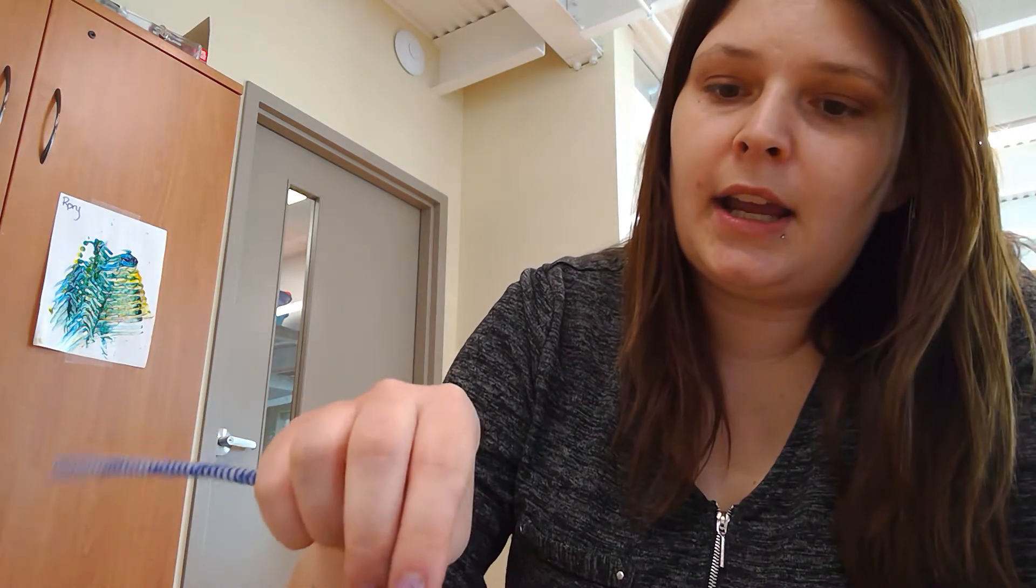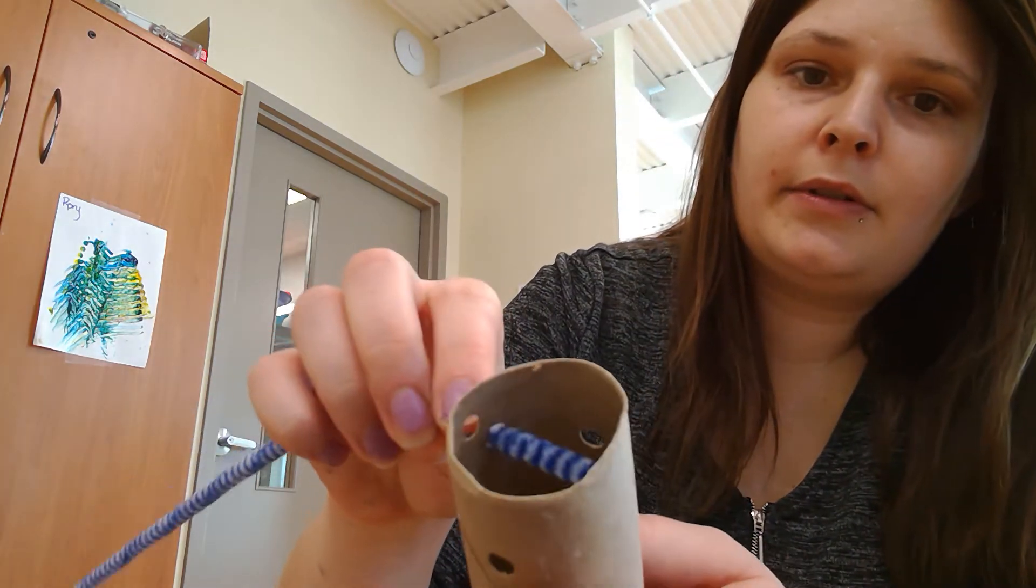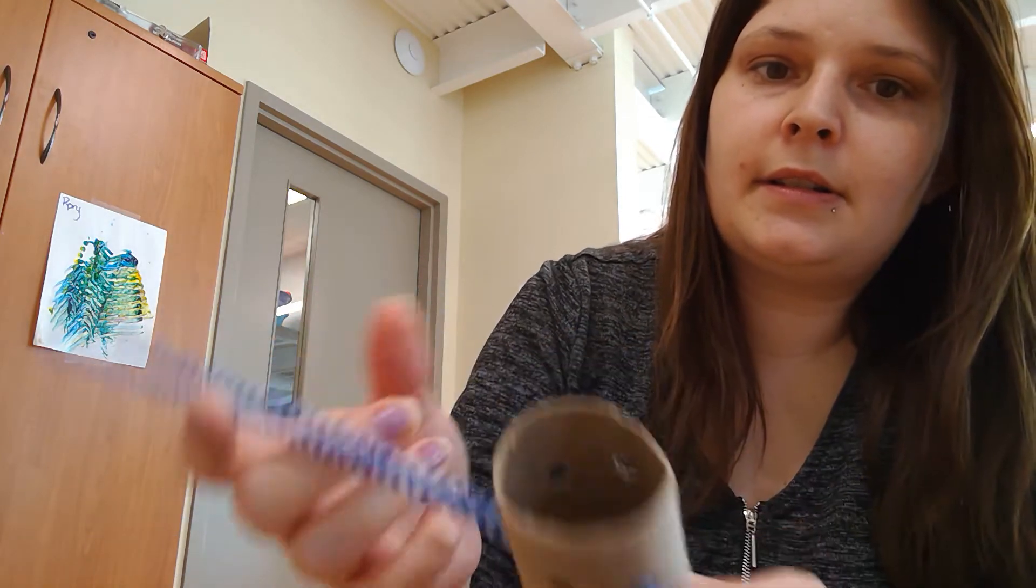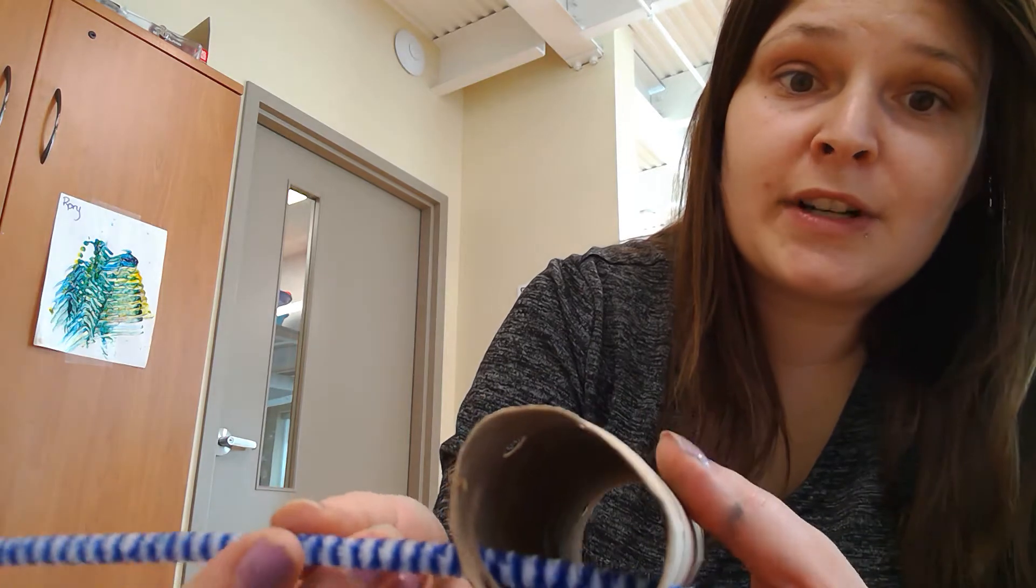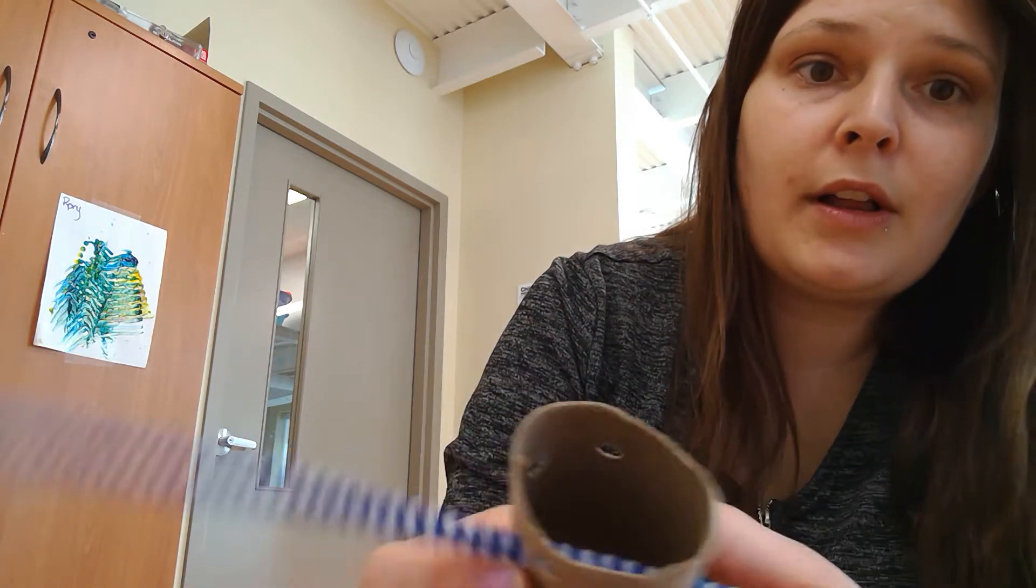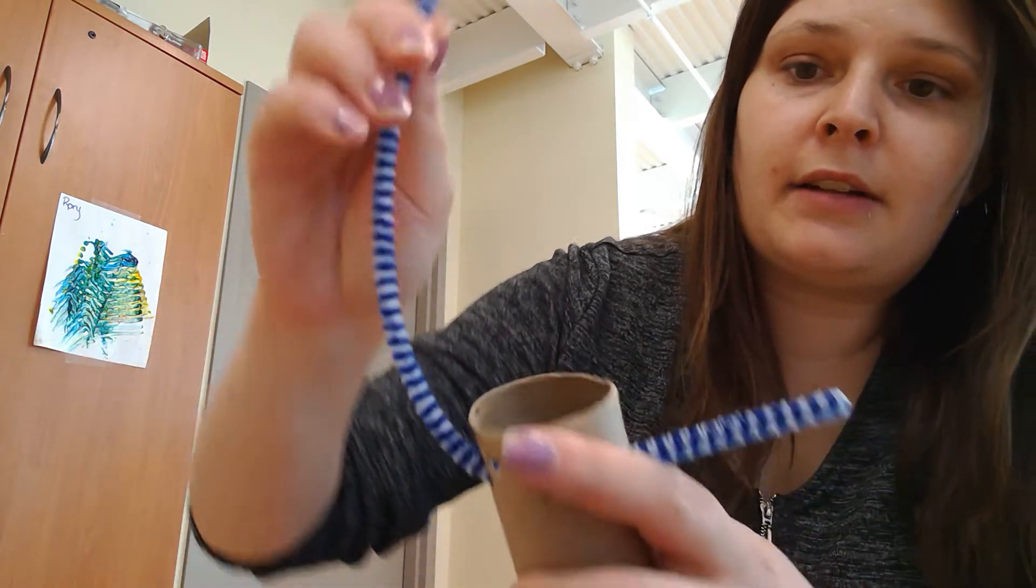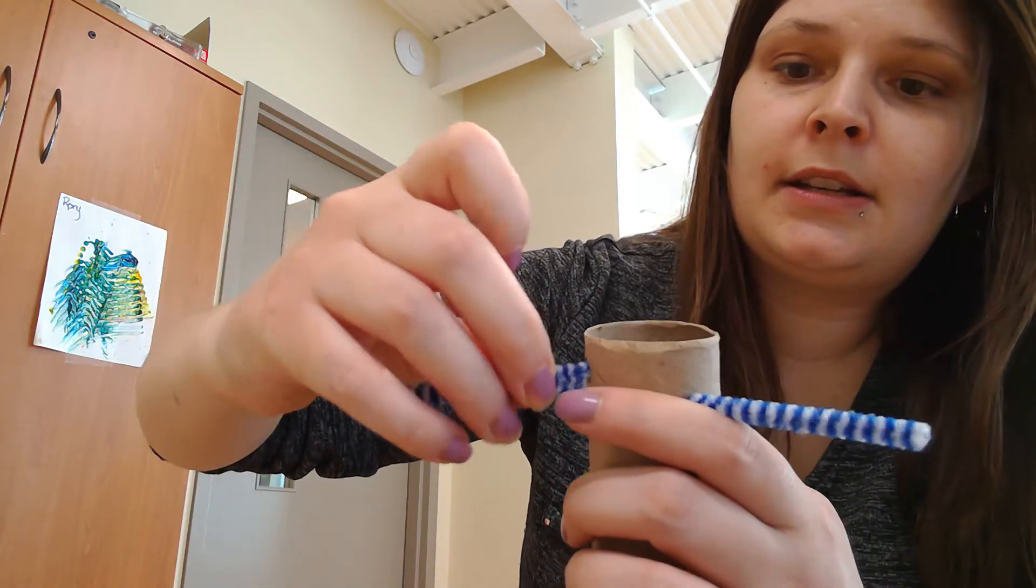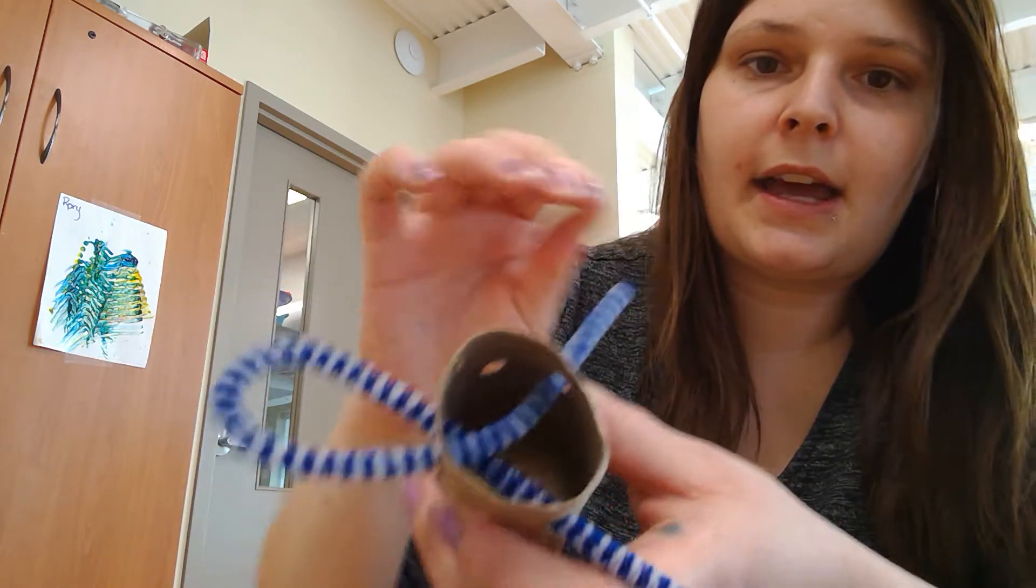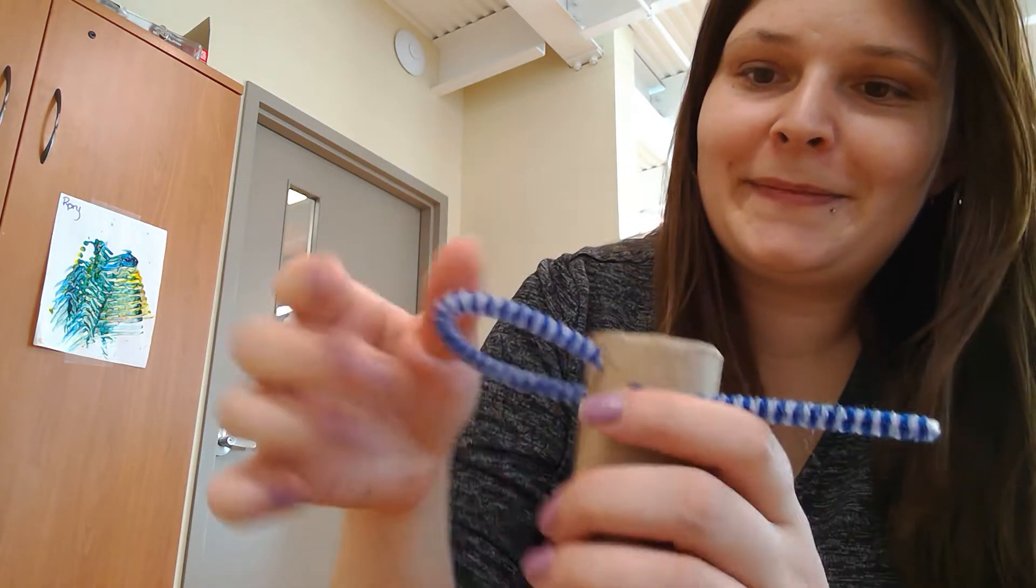And then I'm going to use my pipe cleaner and lace it through the holes. This is a great fine motor skill for your little ones. It helps them line up the pipe cleaner through the hole, get it through the other side, pull it around, and be able to do it again like that. Just like that. So that was our first activity.